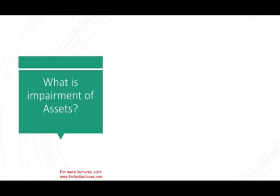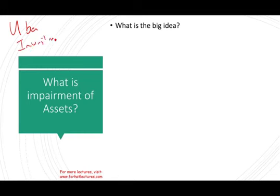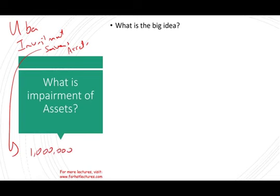So let's talk about impairment of assets. What is the big idea? Let's assume Uber — and this is what actually happened — Uber operates in London. Before they operate in a city, they have to make investments. They might have to buy servers or other assets. Let's assume for the sake of this example they bought 1 million euros worth of assets. They made an investment of 1 million, and Uber started to operate in London.